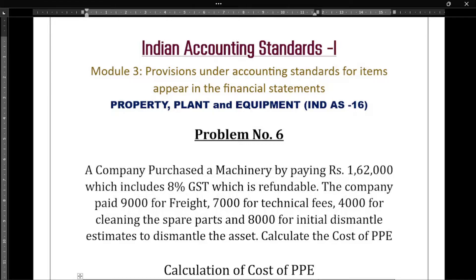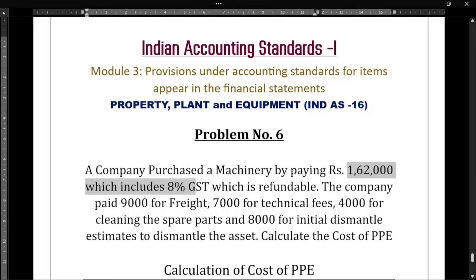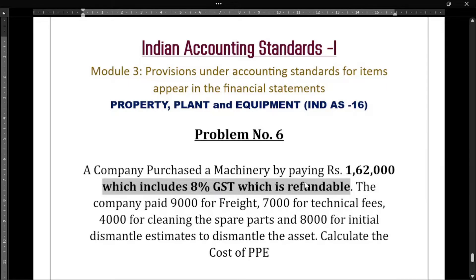The company purchased the machinery by paying Rs 1,62,000 — so this is the purchase price, which includes 8% GST and which is refundable. This is very, very important, please pay attention.